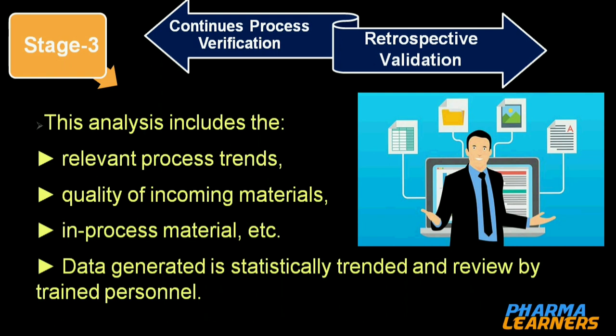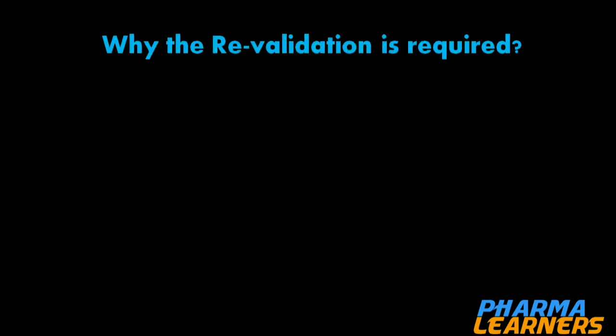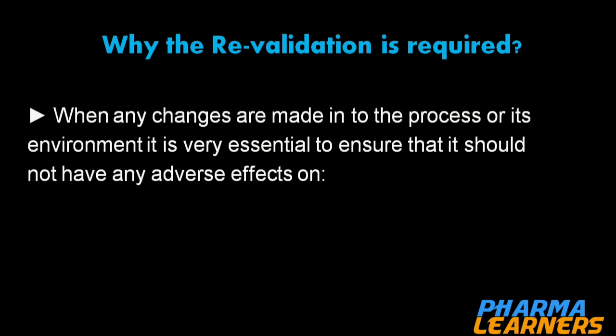This is all about continuous process verification or retrospective validation. The last type is re-validation. Whenever any new element is introduced into the manufacturing process, re-validation has to be performed to determine the effect of this change.